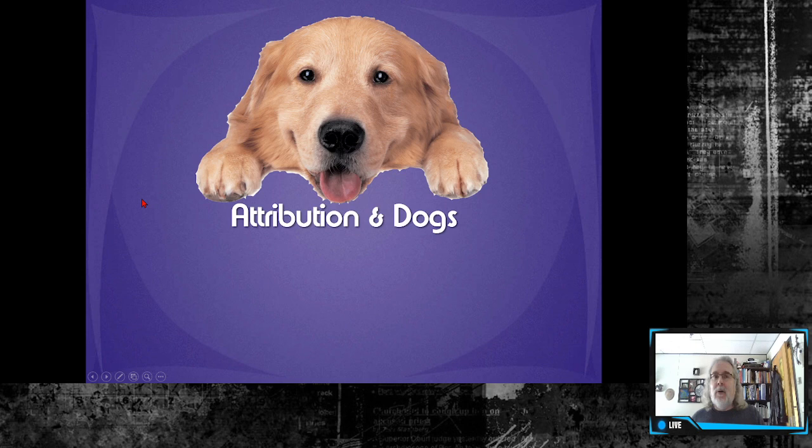We can start off looking at this by thinking about dogs. There's actually been some research looking at the attributions people make about dogs. Specifically if we look at the picture of this particular dog we might ask people to explain what's going on. People might say that dog's happy, it's smiling. Well we don't know if the dog's really smiling because dogs don't really smile.